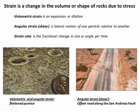Here are a couple of examples. These pumice clasts used to be circular, but they've been squished and also sheared laterally, so they've experienced both volumetric and angular strain. In contrast, here's a highway that's been offset during an earthquake on a strike-slip fault — this is an example of almost purely angular strain. We always measure strain with what's called the strain rate, which is essentially the fractional change in size or angle per time. If the strain rate is faster, something is deforming more quickly.